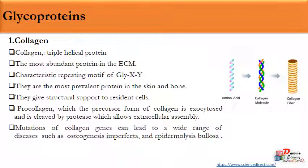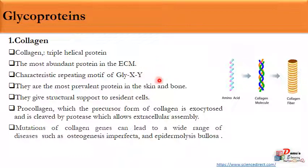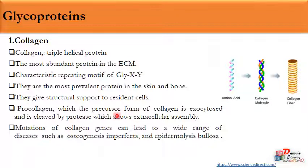The first glycoprotein we are discussing is collagen, which is a fibrous protein with a triple helical structure — it has three helices. Collagen is the most abundant protein in the extracellular matrix and has a repeating motif of glycine-X-Y, where X and Y are two amino acids, most often proline and hydroxyproline. Collagen is the most relevant protein in bone and skin and gives structural support to all the residing cells.